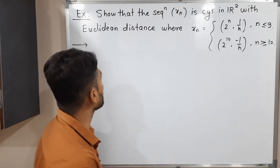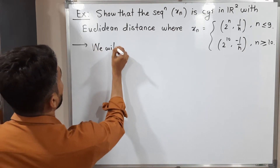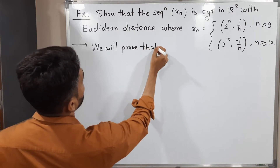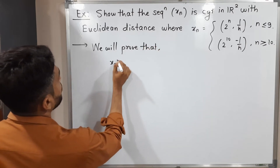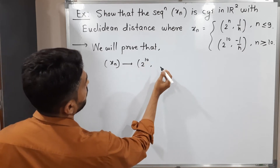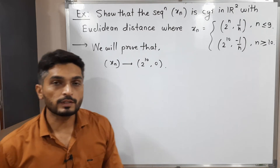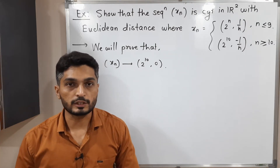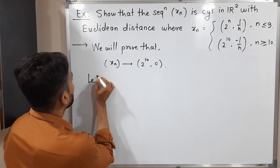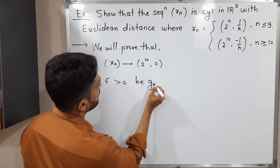Therefore, we are going to prove that the given sequence Xn converges to (2 raised to 10, 0). We will prove this using the epsilon definition. So let epsilon greater than 0 be given.